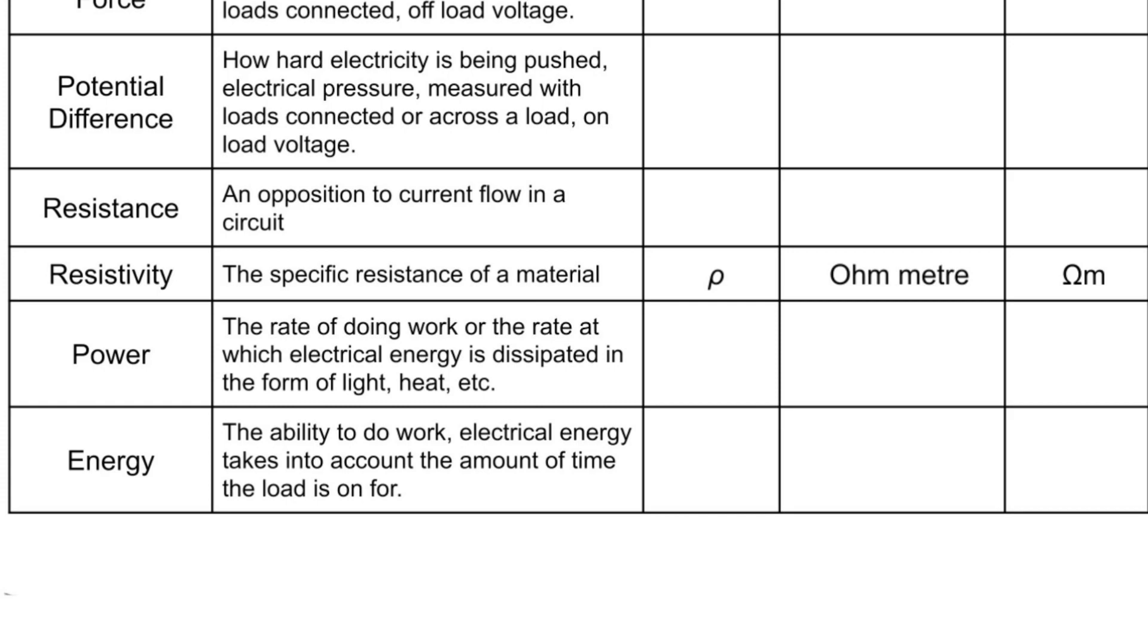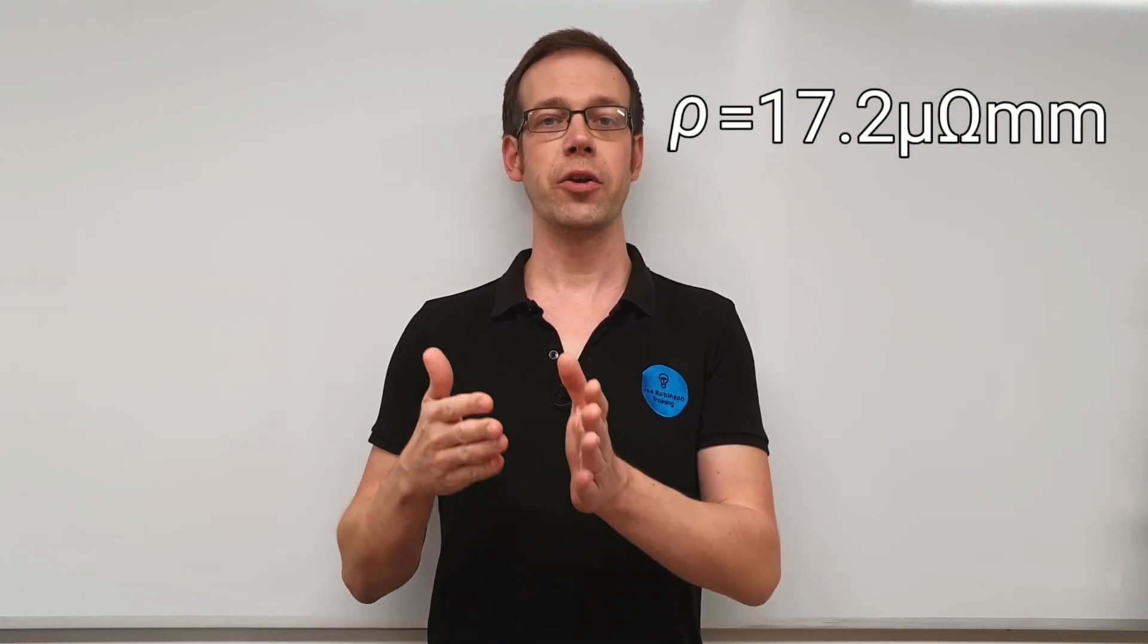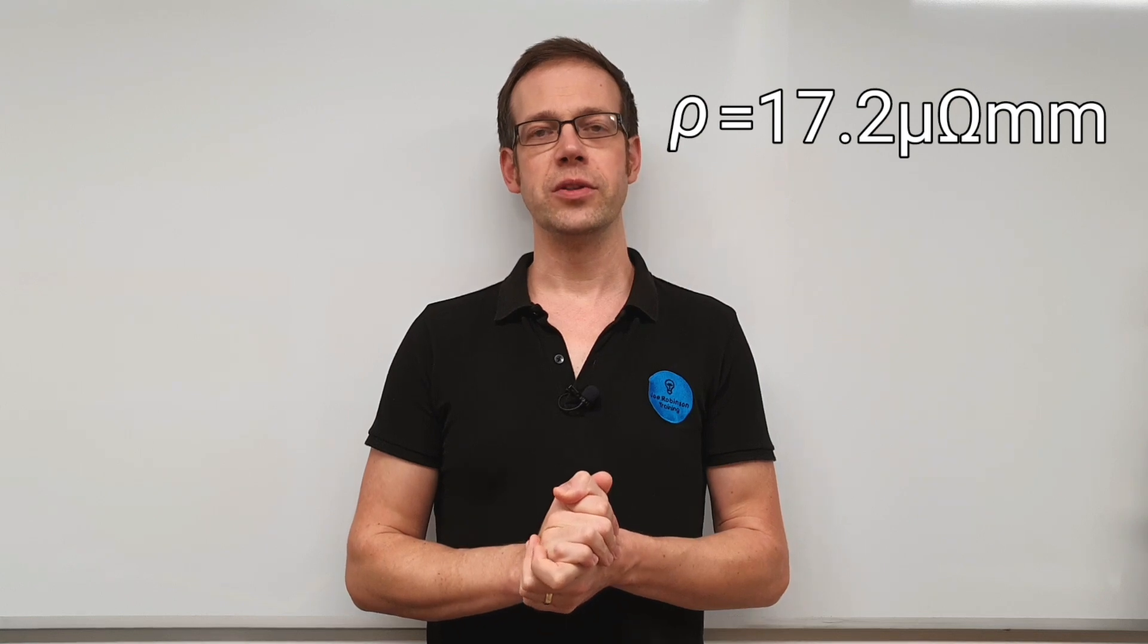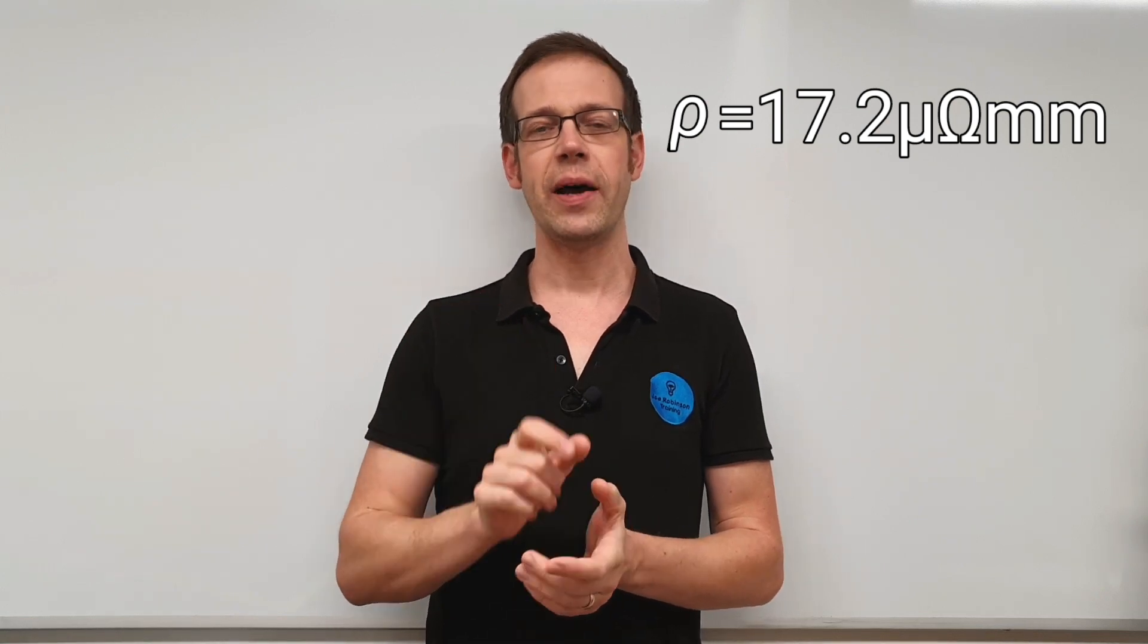So if we were to write that down it might look something like this. We might put rho equals 17.2, and in this case we'll say micro ohm millimeters. So we've got those multiples and submultiples there. A word on that in a future video on multiples and submultiples because we've got to be a little bit careful about that micro ohm millimeter business. But watch a future video for a little bit more information about that.